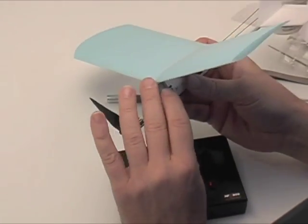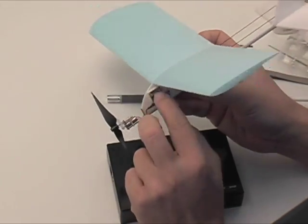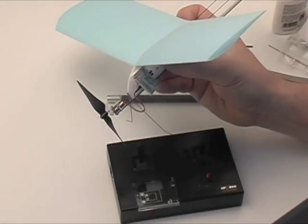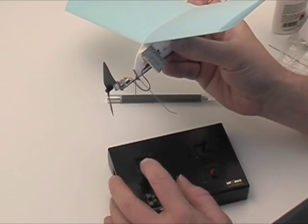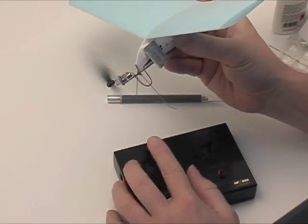You can put your propeller on now and make sure it's going in the right direction. Reverse the plug if needed. Now you can take your receiver, put it on the front end of the fuselage just as you see, and the thing will just about be ready to fly off the table.